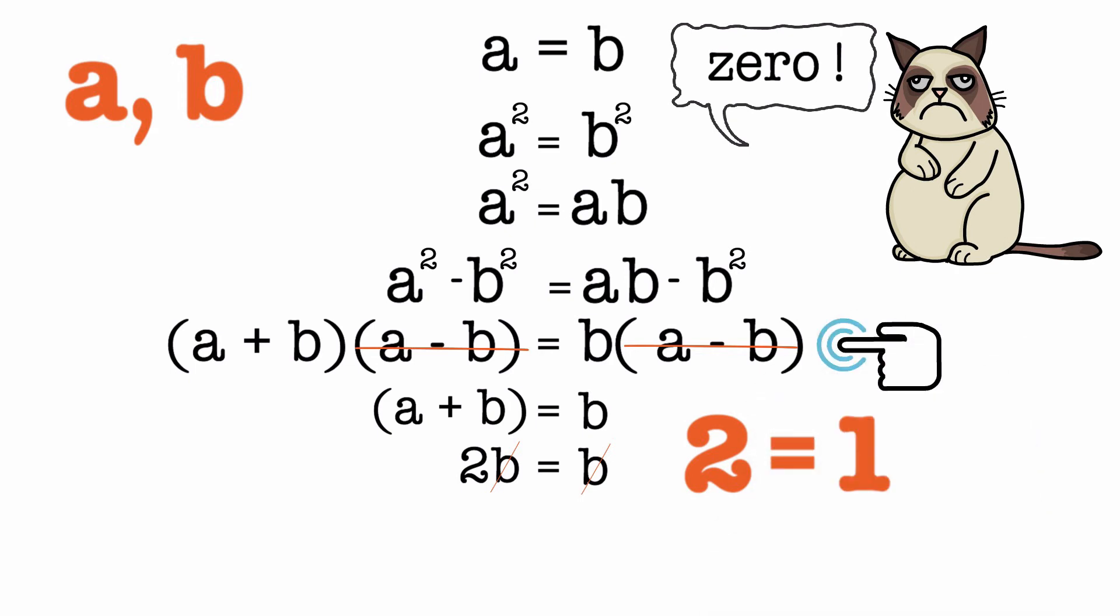Here, we divided both sides by A minus B. But if A equals B, A minus B is 0 and we are dividing by 0.